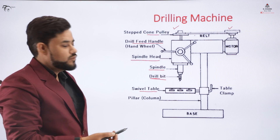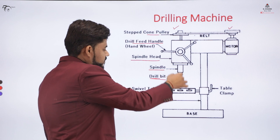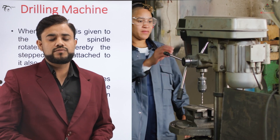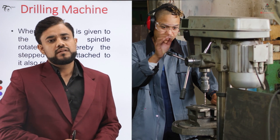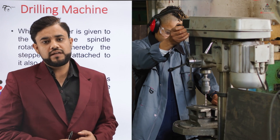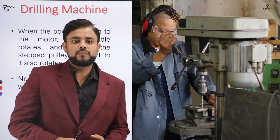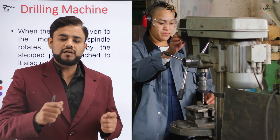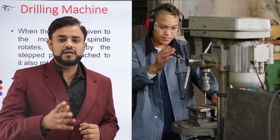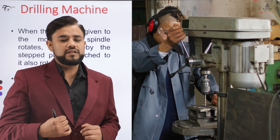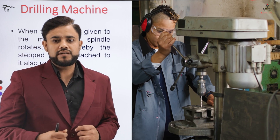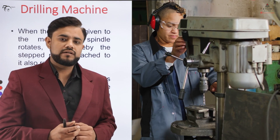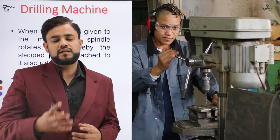The drilling bit comes into rotational motion, and when it comes in contact with the workpiece placed on the table, a drill hole is obtained. The operator moves the handle connected to the spindle head, which moves downward to drill the hole on the surface of the workpiece. Power is given to the pulley, which in turn drives the spindle head connected to the drill bit, and the rotary motion of the drill bit in contact with the workpiece produces the drilled hole.